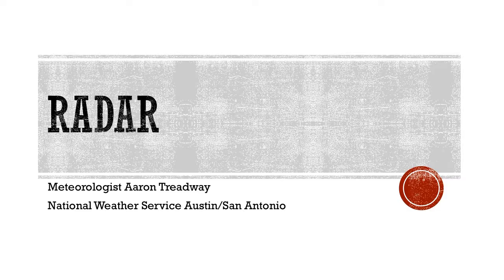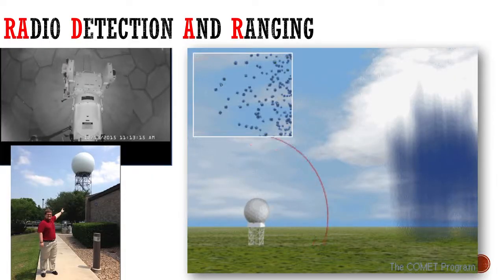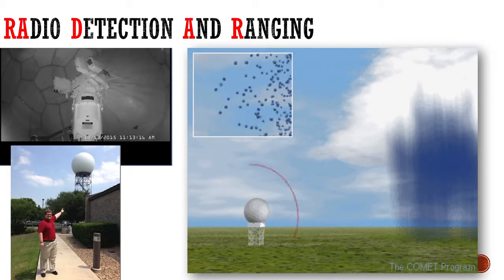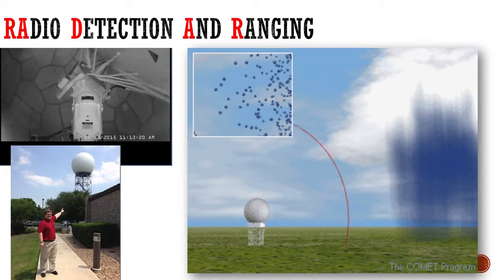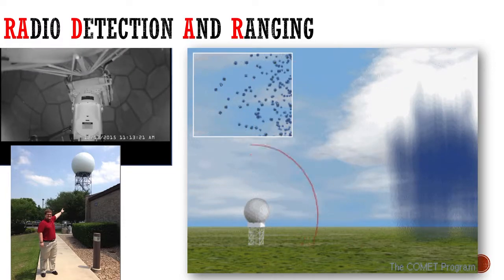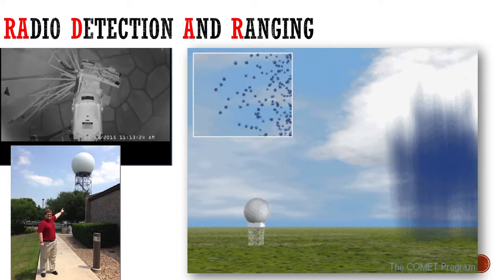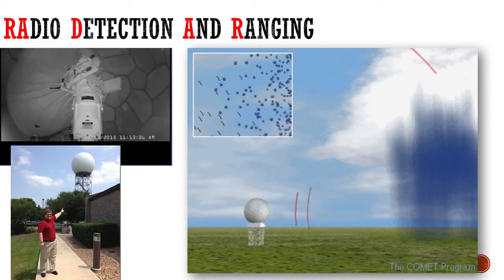So radar is one of the tools that we use to actually see what's going on in the atmosphere. Specifically things like thunderstorms and tornadoes and flooding rainfall. So radar stands for Radio Detection and Ranging. There I am pointing at our local radar, which is just outside our office in New Braunfels, Texas, near Austin and San Antonio.